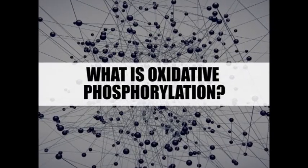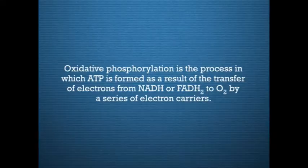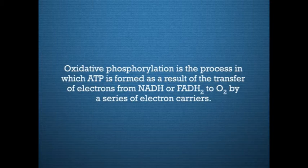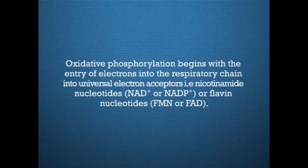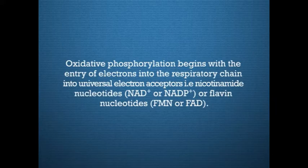So what is oxidative phosphorylation? Oxidative phosphorylation is the process in which ATP is formed as a result of the transfer of electrons from NADH or FADH2 to molecular oxygen by a series of electron carriers. Oxidative phosphorylation begins with the entry of electrons into the respiratory chain into universal electron acceptors — nicotinamide nucleotides like NAD+ or NADP+, or flavin nucleotides like FMN or FADH.